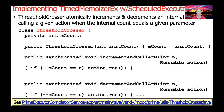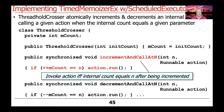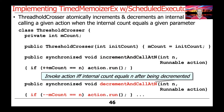The last piece of the puzzle is the ThresholdCrosser class. I wrote this class to atomically increment and decrement an internal count, calling a given action when the internal count equals a given parameter n. The constructor sets the count to its initial value, which we set to zero. It has two useful methods: incrementAndCallAtN and decrementAndCallAtN. Both are synchronized methods. incrementAndCallAtN increments by one and runs the action if the count equals n; decrementAndCallAtN decrements by one and runs the action if the count equals n.